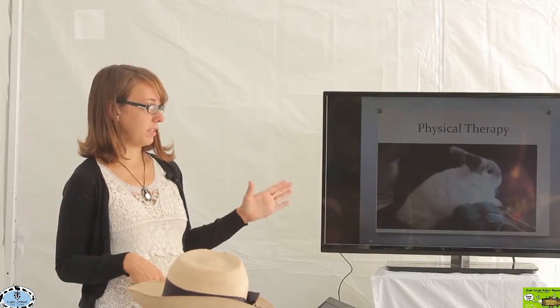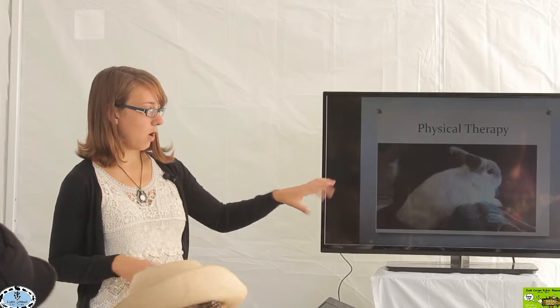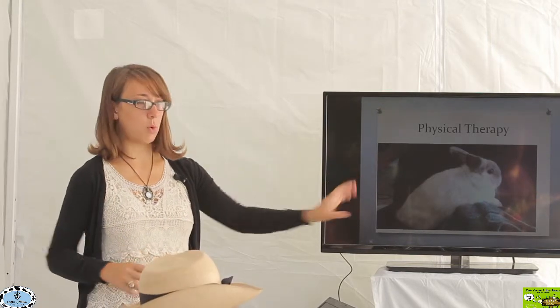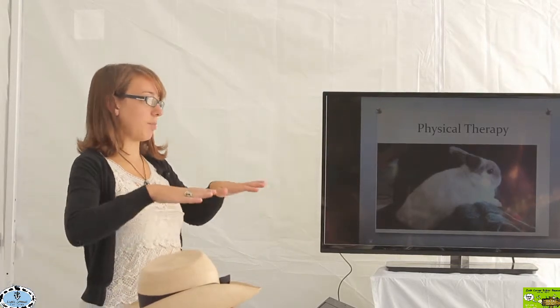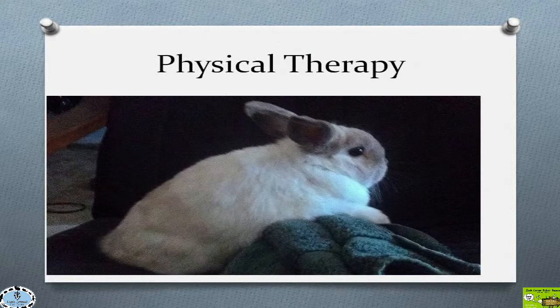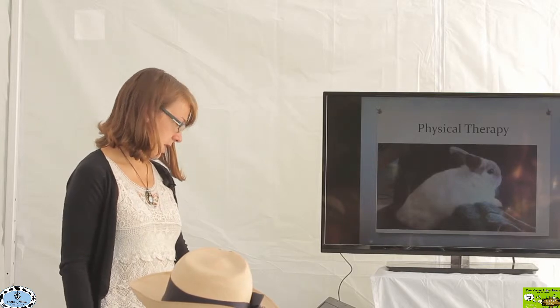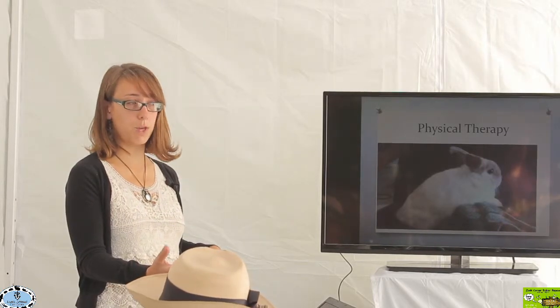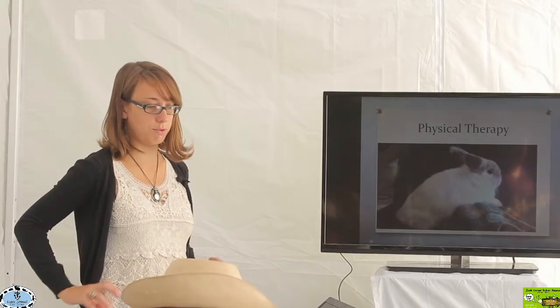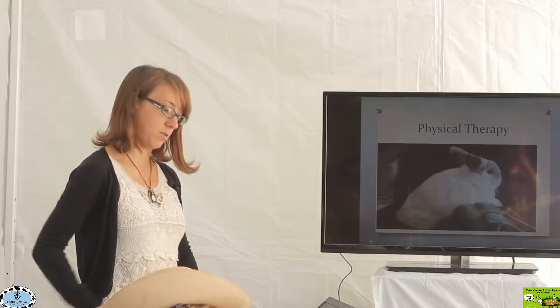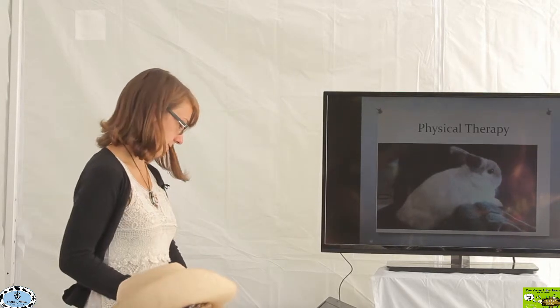So this rabbit here that's demonstrating the towel rolled up is going to be working more on those hind limbs. He's having pressure taken off of the front limbs and putting more pressure on those hind limbs so he just has to bear more weight there. If it was the front limbs that we had a problem with then you can obviously move that roll to the back end for the rabbit to take pressure off the back more onto the front.